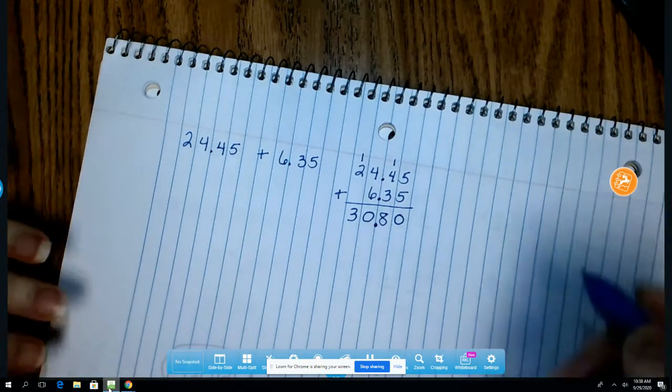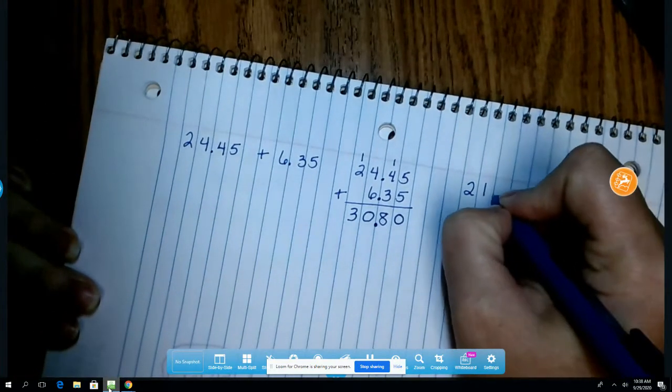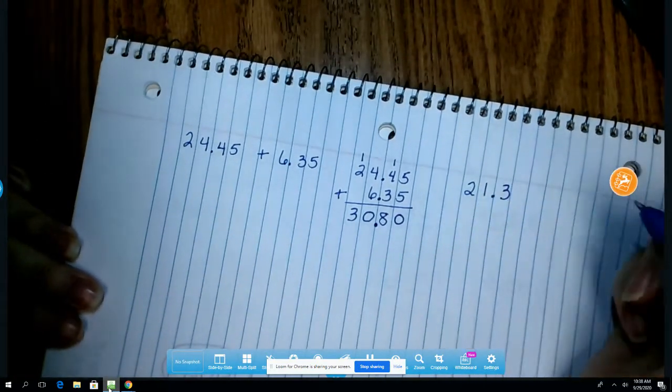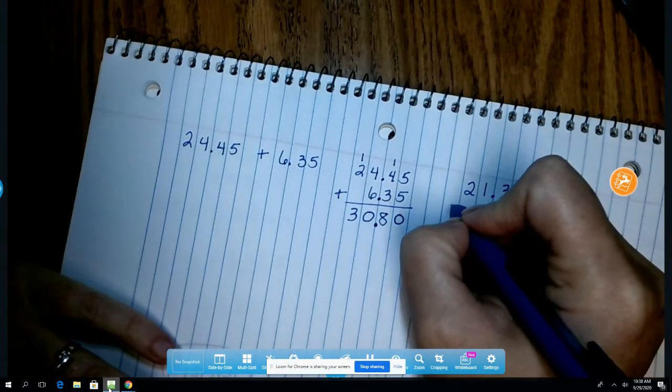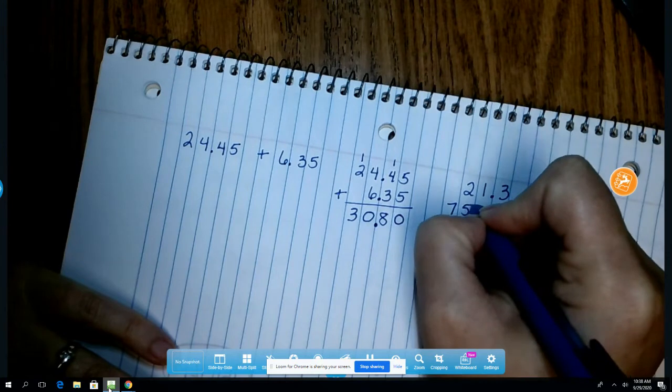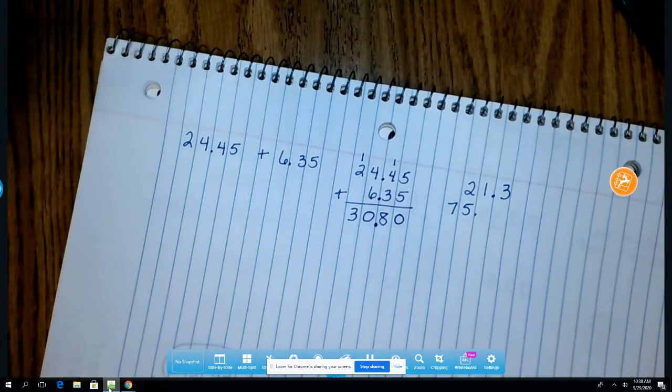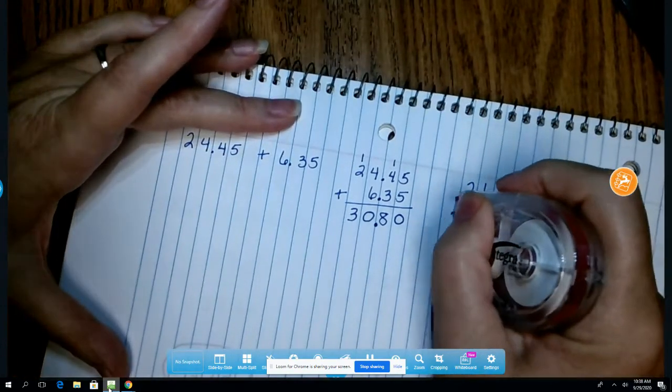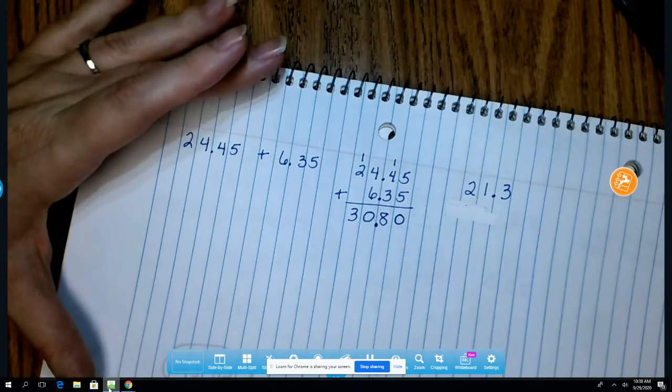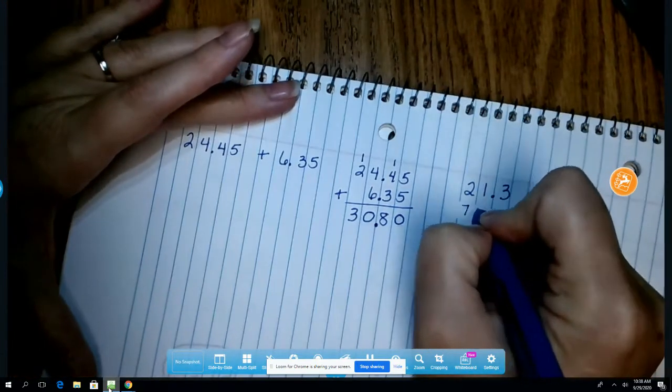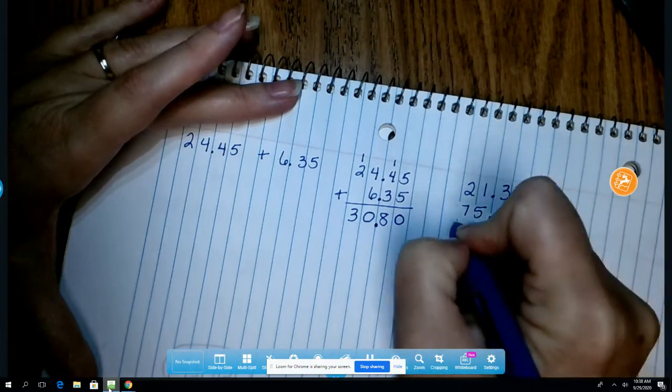Let's try 21 and 3 tenths and 75 and 76 hundredths. See I almost didn't put the decimal in the right place and that would have messed everything up and I would not have come out with the correct answer. 75 and 76 hundredths.